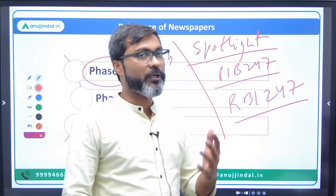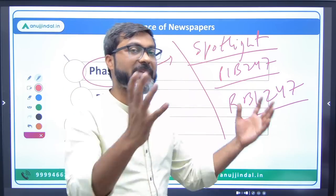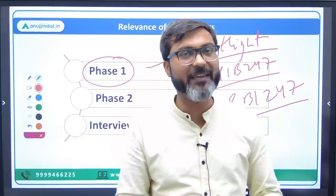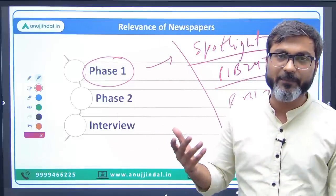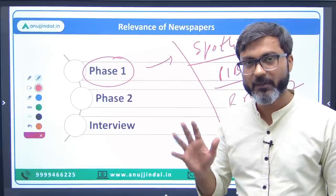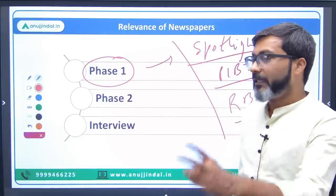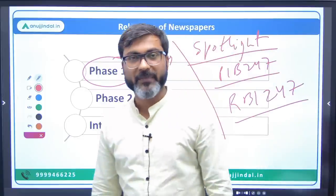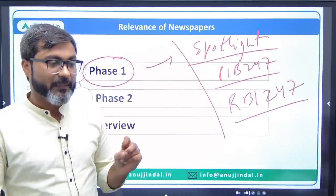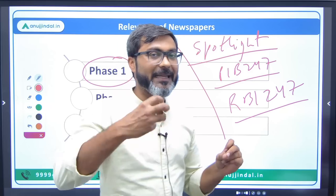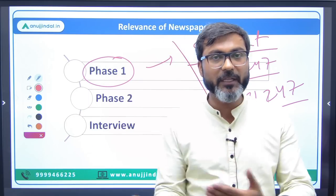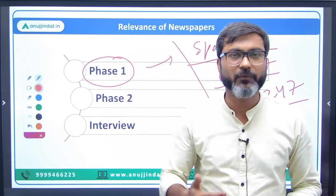Not only newspapers — we also cover various websites like PIB, RBI website, SEBI website, and all those regulatory bodies. Now the second role of a newspaper is that it helps you create an opinion about events going on around you — for example, inflation, or any global development.